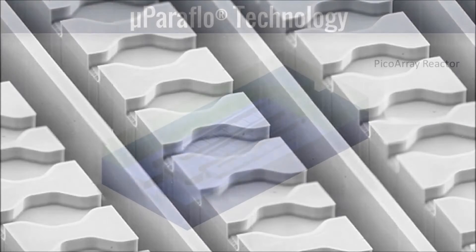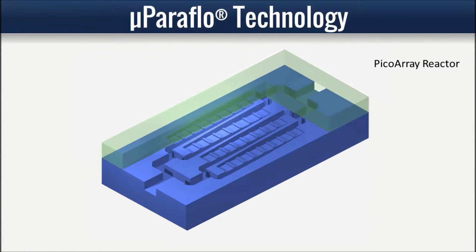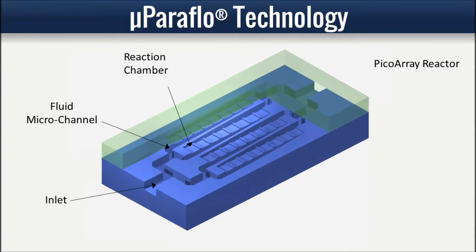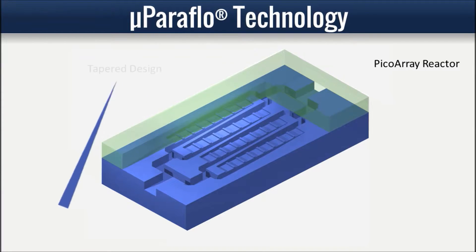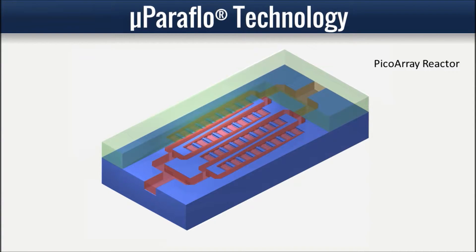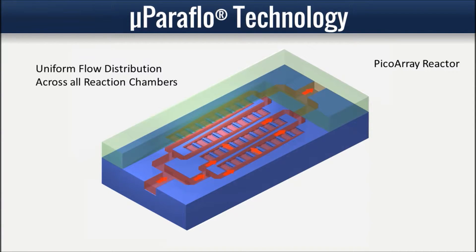The microfluidic chip is a closed system made of individual parallel reaction chambers manufactured on a silicone substrate and covered with glass. The reactor contains three topographical features: picoscale reaction chambers, fluid micro channels, and inlet outlet holes. The fluid micro channels are designed with a tapered shape derived from a fluid mechanical model to produce a uniform flow rate across all reaction chambers.